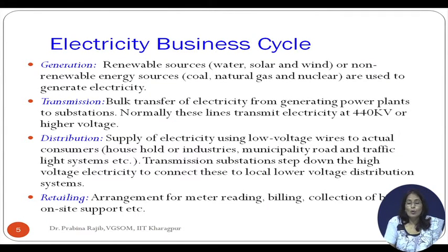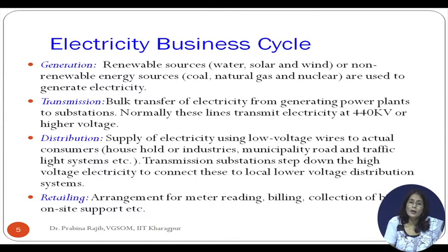Let us quickly go through the different dimensions of the electricity business. You have generation — electricity power generators, or gencos — which can use renewable or non-renewable sources. Besides generation, you have transmission: long-distance, interstate and inter-region transmission. Then distribution, which involves delivering electricity from transmission lines to consumers — households and industries — done through distribution companies. Finally, you have retailing, which deals with meter reading, billing, collection of electricity charges, online support, etc.